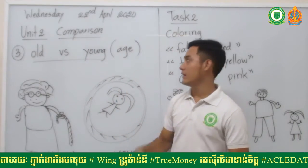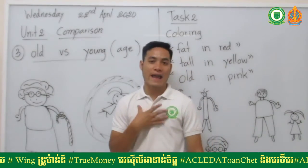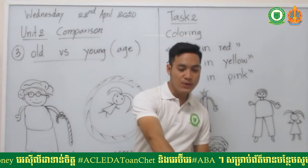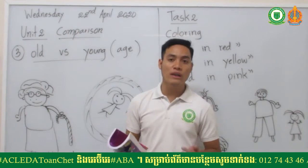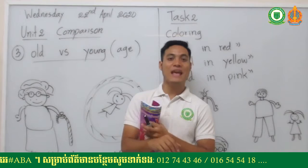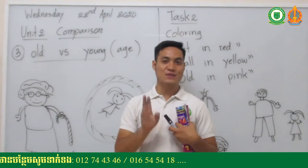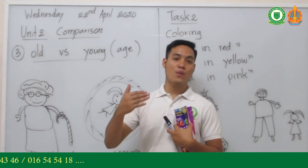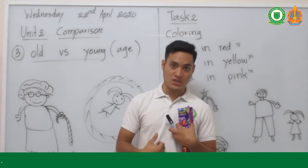We use old or young when we want to compare about age. For example, I am 10 years old and you are 2 years old. Between 2 and 10, which is more? Ten is more, so ten is old. Two is less than ten, so two is young.